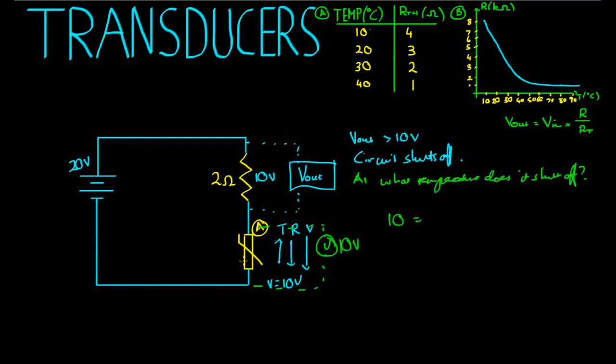V_out equals 10, going off this thermistor here, is equal to V_in, that's 20, times the resistance here, which is right now a mystery. So we're at a certain resistance over the total resistance, which is the mystery resistance. We'll say R_TH, our thermistor, plus 2 ohms. We can divide both sides by 20, so we're trying to find R_TH, the thermistor resistance, because that will lead us on to the temperature at which it shuts off. So 10 divided by 20 equals R_TH over R_TH plus 2.